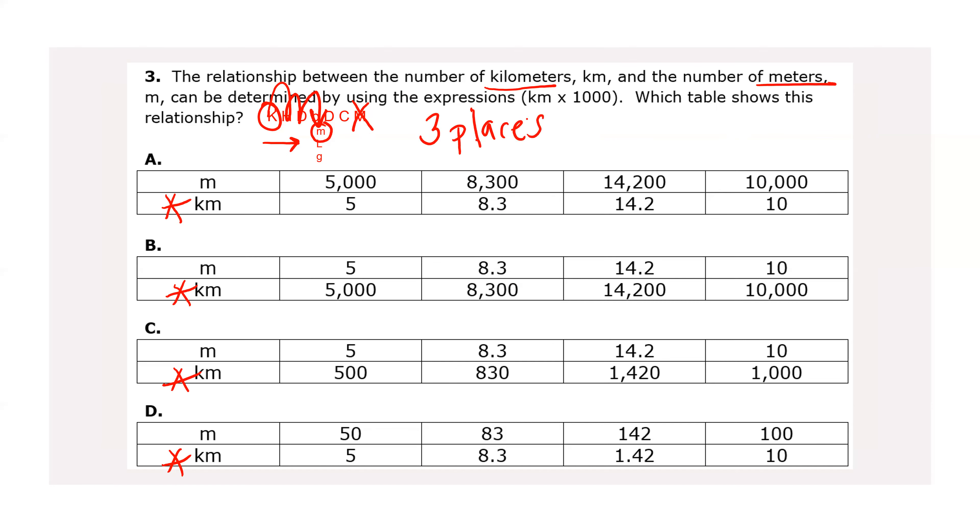So I'm starting on the bottom because that's where my kilometers is. There's a whole number five. The decimal point is at the end. And now I move it three places to the right. Once, twice, three times. And I get 5,000. Which is what we have. So let's check the next one in that same table. 8.3. I move it three places to the right. Once, twice, three times. And I fill in zeros and I get 8,300.